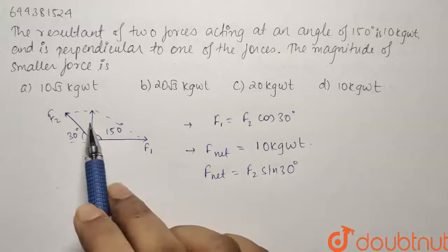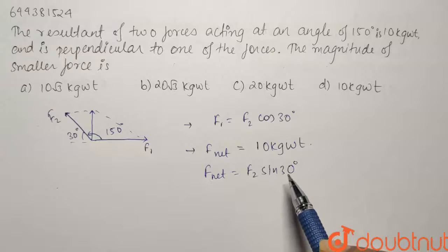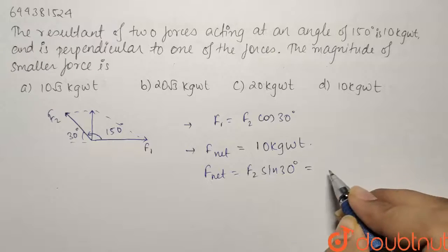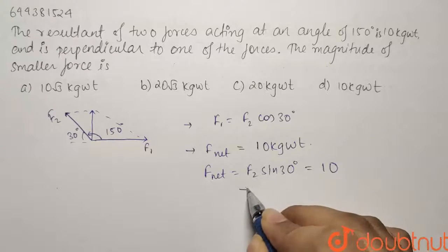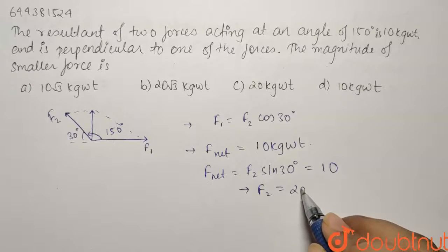As F1 is going to have no component perpendicular to itself, F_net is going to be F2 sin 30. So from here we will get the value of F2. F2 comes out to be 20 kg weight.